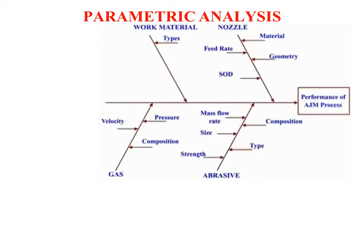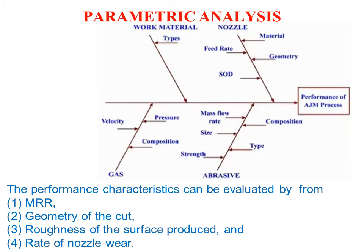The parametric analysis is described by this fishbone diagram. First is work material types. Second is nozzle, which involves the SOD standoff distance, geometry, feed rate, and material. Third is gas: velocity, composition, and pressure. Fourth is abrasive: strength, type, size, composition, and mass flow rate. The performance characteristics can be evaluated from MRR, geometry of the cut, roughness of the surface produced, and rate of nozzle wear.